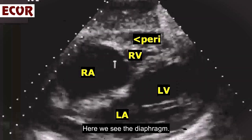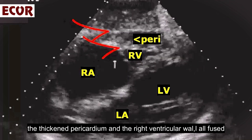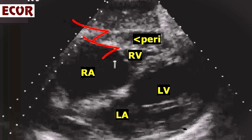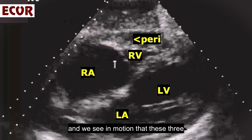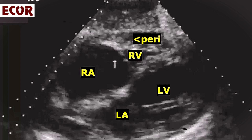Here we see the diaphragm, the thickened pericardium, and the right ventricular wall, all fused. We see in motion that these three structures will be moving as one, pulling the diaphragm.